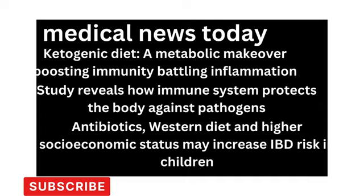Lower socioeconomic status appears to be a protective factor associated with a 65% lower risk of childhood IBD. Greater consumption of vegetables was also protective, as was having two or more siblings and being exposed to pets during childhood. The findings that exposure to animals and having only one toilet are protective of IBD indicate that excessive hygiene can reduce microbes in the environment and interfere with development of a robust microbiome. A Western diet high in sugars and ultra-processed foods and low in vegetables is a prime example of a risk factor.